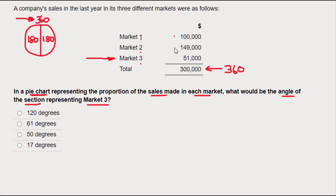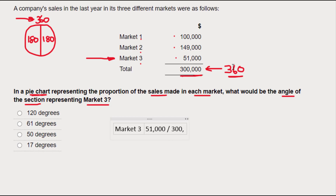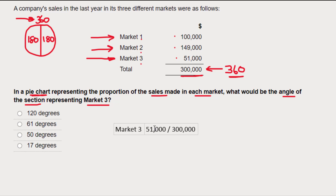I need to work out what proportion each of these markets is out of the total of 300,000, to work out what proportion they are of 360 degrees. Let's start with market three, because that's what the question is asking. Market three has sales of 51,000 out of a total of 300,000. When I put 51,000 divided by 300,000 into my calculator...